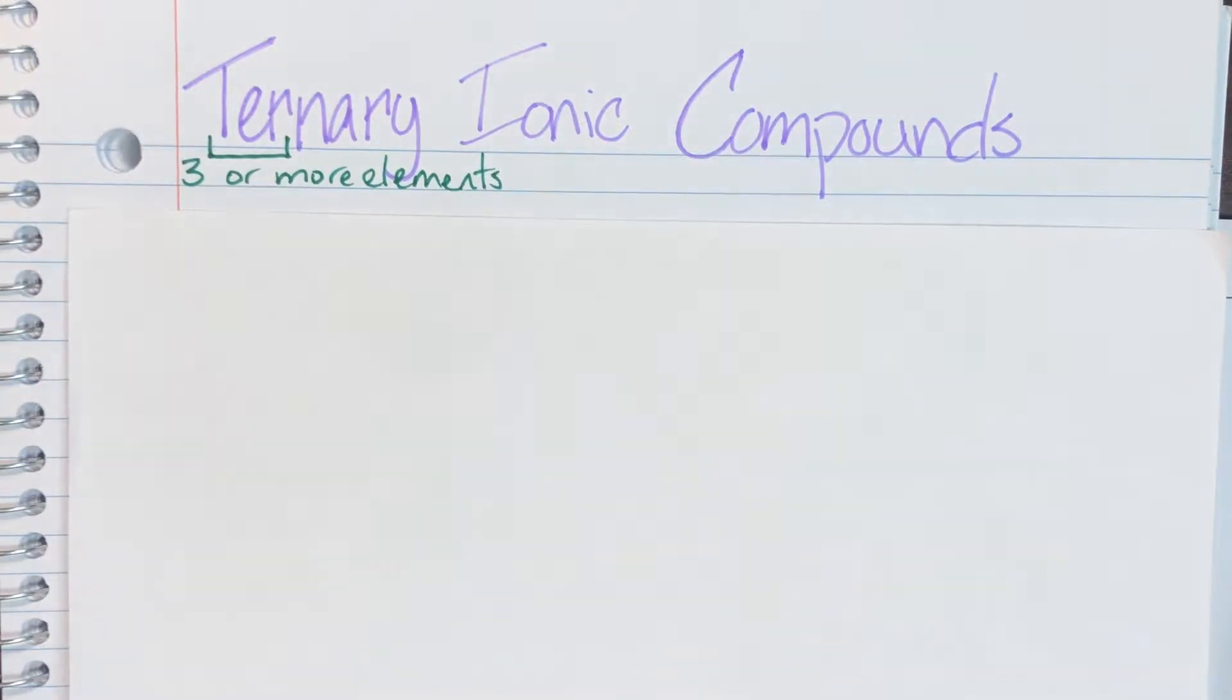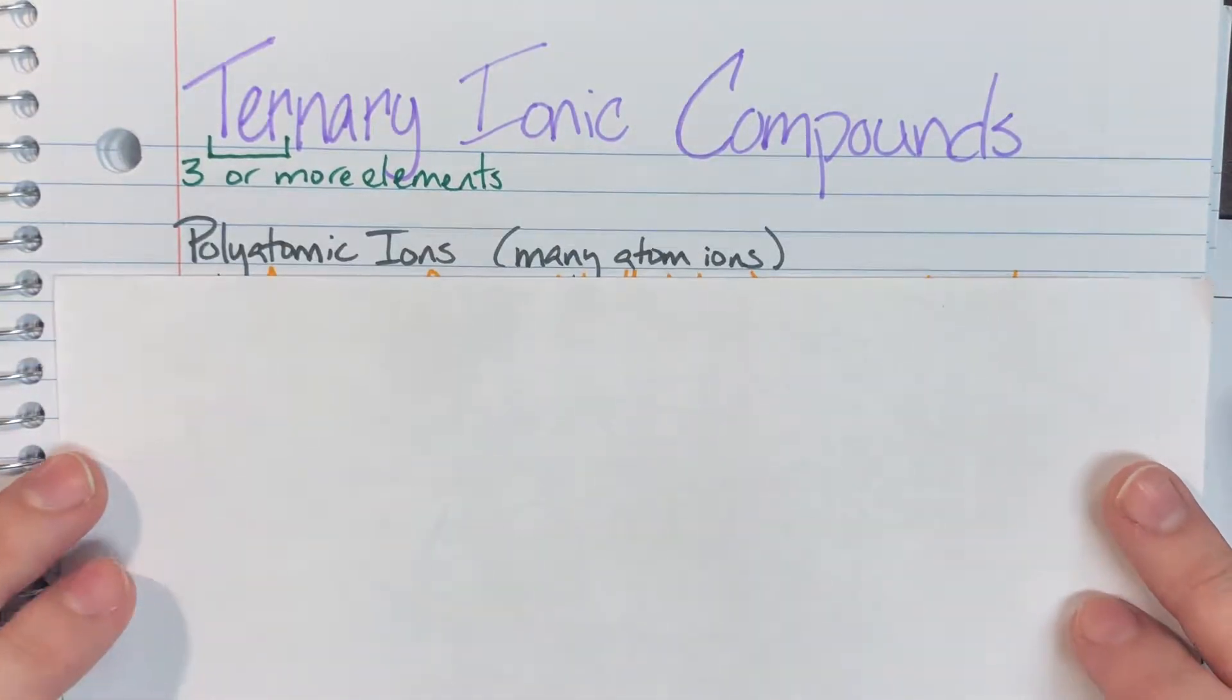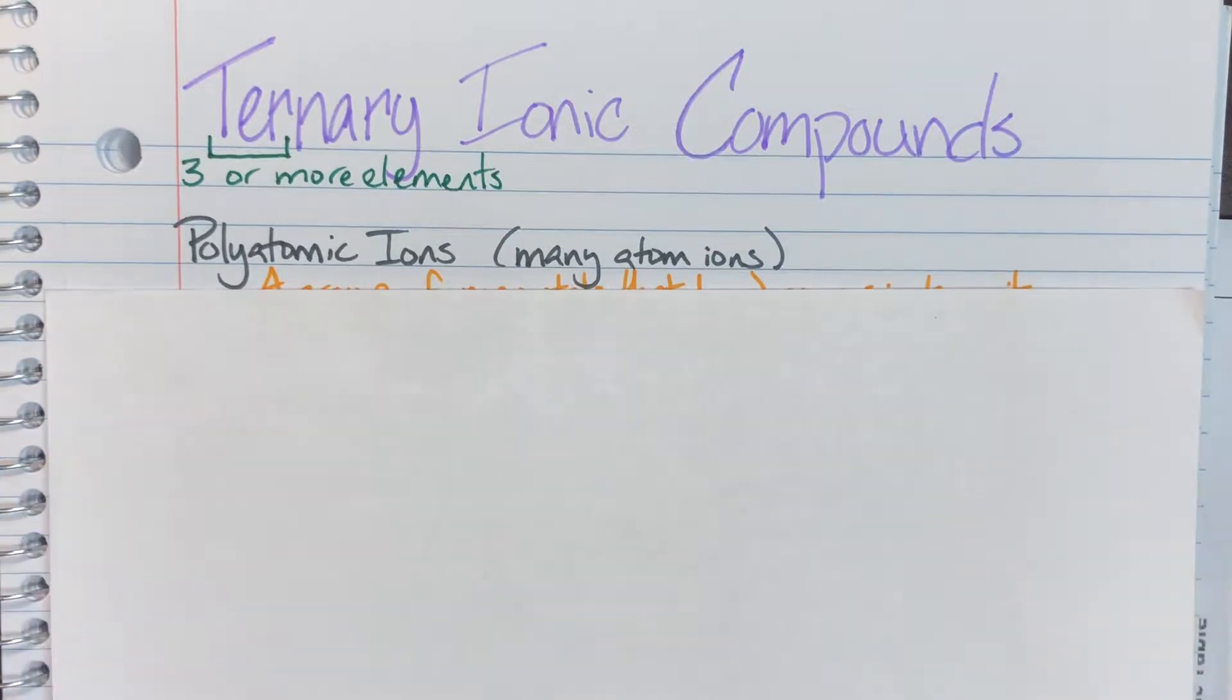Today we're going to be talking about ternary ionic compounds. The ternary in ternary ionic compounds means that I'm going to have three or more elements present inside of my ionic compound, and what this means is that I'm going to have one of my ions be a polyatomic ion.